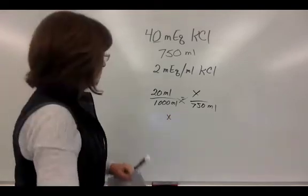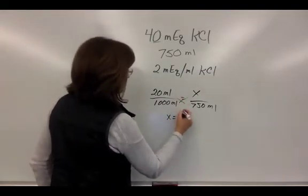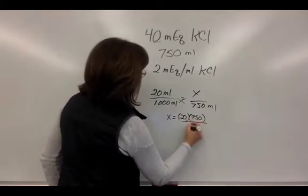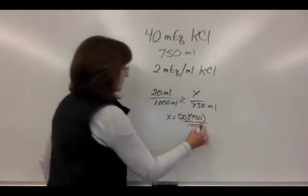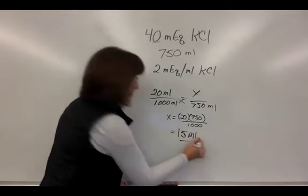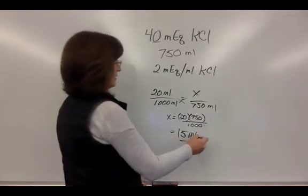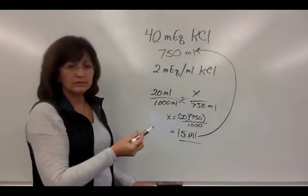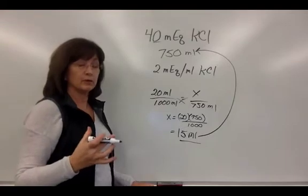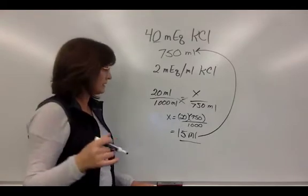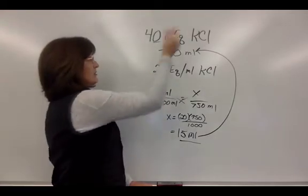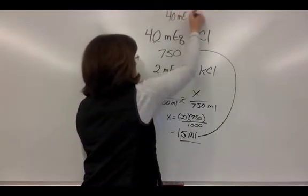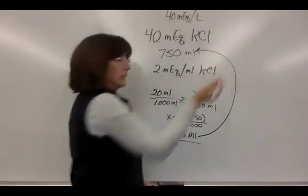Then you can cross-multiply, and in this case x equals 20 times 750 divided by 1,000, which equals 15 mLs. So in this case you'll be adding 15 mLs to your 750 mLs of fluids left in your one-liter bag, and you still have a resulting concentration of 40 milliequivalents per liter.